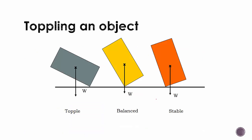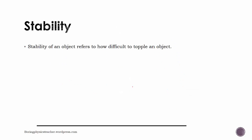In summary: if you tip by a small angle, the object is stable and falls back. If you tip too large an angle, the weight goes beyond the base of support and the object topples over. There is also a critical point where the center of gravity is directly above the point of support and the object remains in balance. Stability refers to how difficult it is to topple an object.